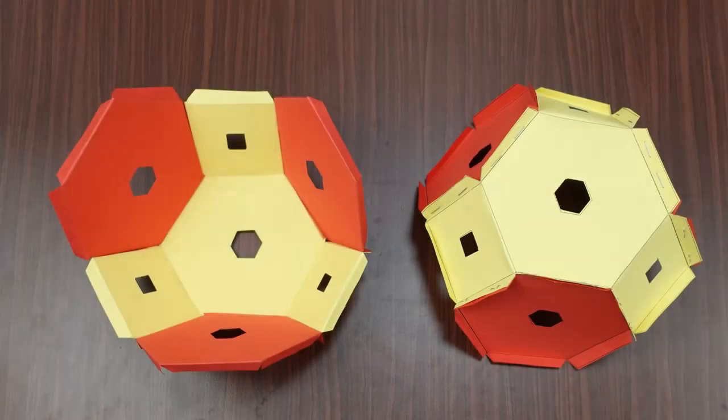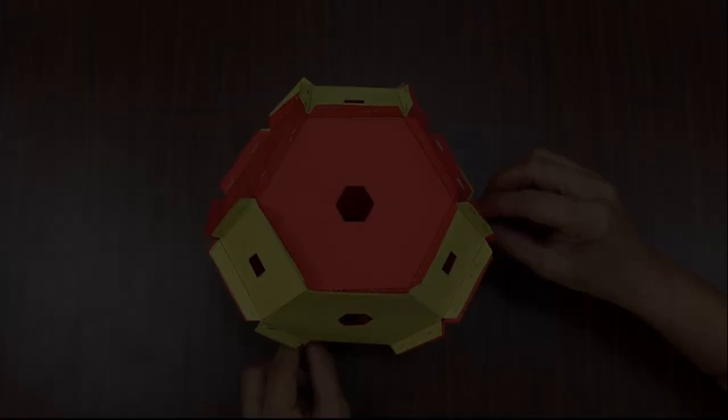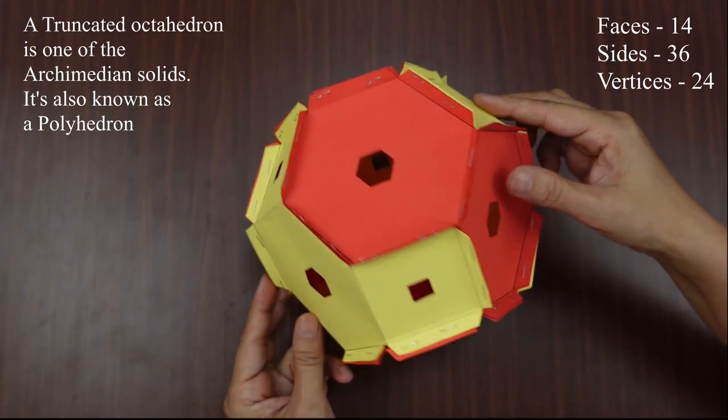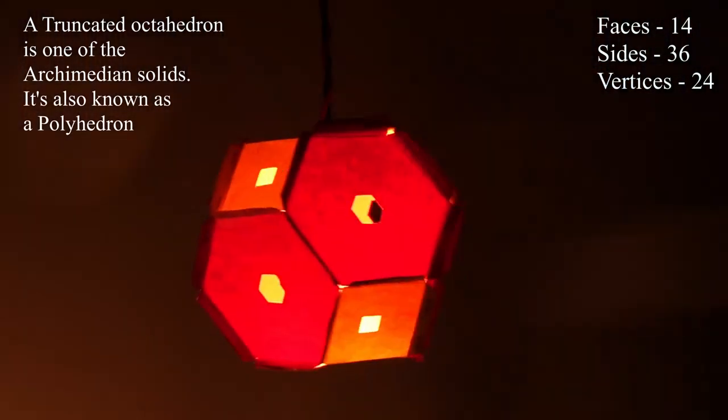Thus, when all the flaps are joined to the side flaps, we see the truncated octahedron formed. This truncated octahedron has 14 faces, 36 sides, and 24 vertices. It is a polyhedron.